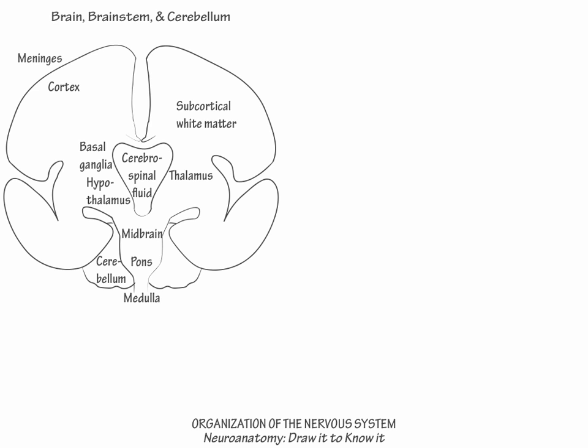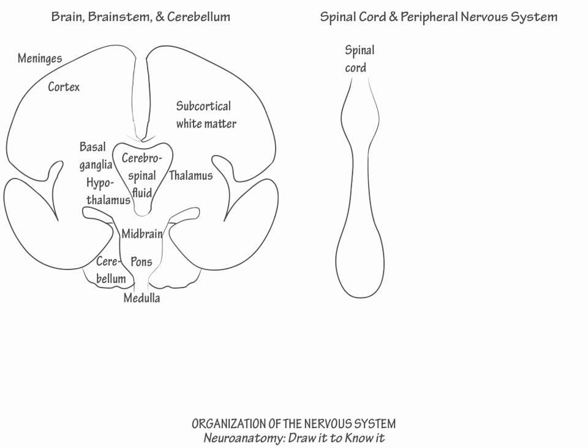Next, we will address the spinal cord and peripheral nervous system. Draw the long, thin spinal cord with its cervical and lumbosacral enlargements. Label the segments from top to bottom as cervical, thoracic, lumbosacral, and coccygeal. The cervical segment mostly communicates with the upper extremities, upper trunk, head, and neck. The thoracic segment mostly communicates with the trunk and abdomen, and the lumbosacral segment communicates with the abdominal pelvic region and the lower extremities.